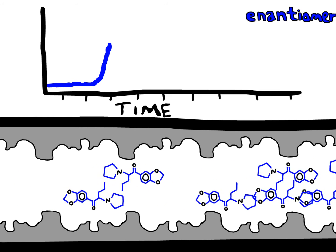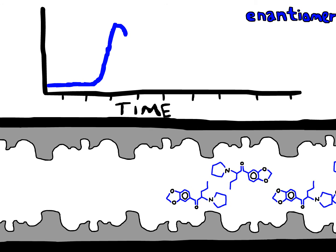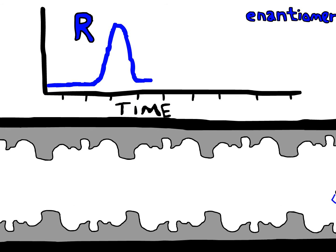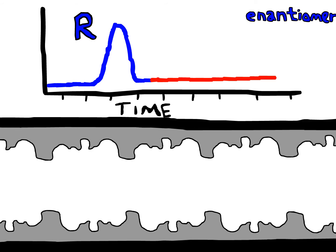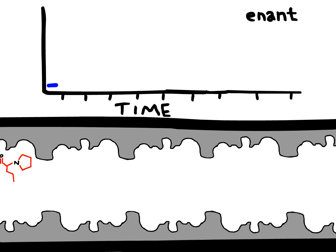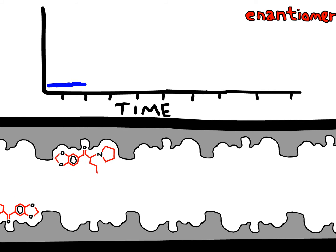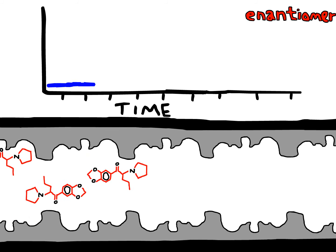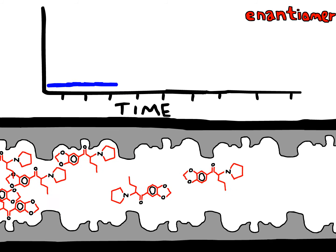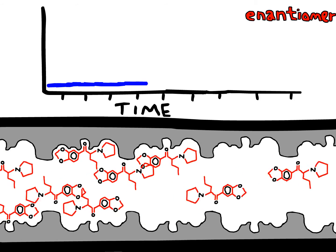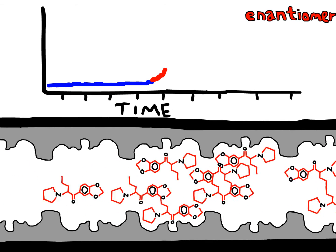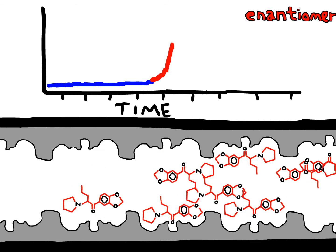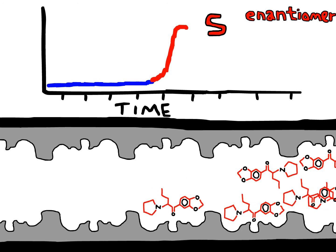Here one can see that only R-MDPV was injected into the column. If, for example, the sample only contains S-MDPV, you won't see the early R-MDPV retention time. Instead, you'll see the peak come off later, just like it would if you were analyzing the racemic MDPV mixture.